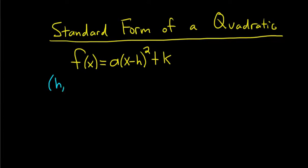The vertex is (h, k), so this here is called the vertex. And the line x equals h, this is called the axis of symmetry.